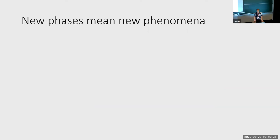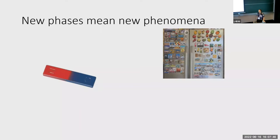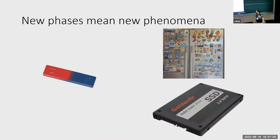So why do we want to study new phases of matter? Fundamentally, new phases of matter mean that we get new physical phenomena to study. For example, a familiar one — a magnet — has a very interesting physical phenomenon associated with it. If you throw it at your refrigerator, it sticks. But we can also use these physical phenomena for a lot of practical purposes as well. For example, the physics of magnetism plays a critical role in looking at solid-state hard drives.